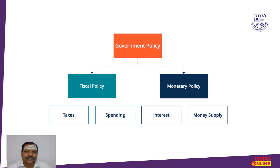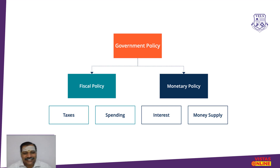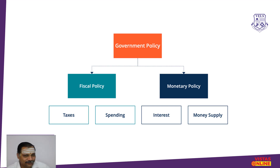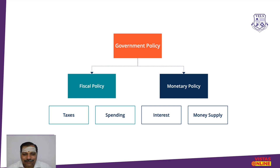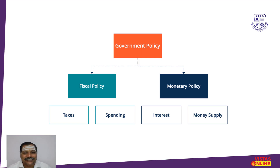First of all, we should know the government has two macro policies. One is Fiscal Policy, and another one is Monetary Policy. Fiscal Policy is related to direct and indirect taxes and spending from the household, industry, and government. The other side, Monetary Policy, the main two concepts we have to focus on are money supply and the interest rate — it may be a repo rate of a bank, or it may be the interest rate of a bank, or the return on capital.